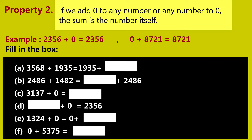Fill in the box. 3,568 plus 1,935 is equal to 1,935 plus 3,568. 2,486 plus 1,482 is equal to 1,482 plus 2,486. 3,137 plus 0 is equal to 3,137. 2,356 plus 0 is equal to 2,356. 1,324 plus 0 is equal to 0 plus 1,324. 0 plus 5,375 is equal to 5,375.